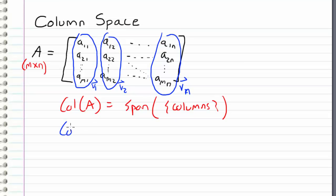So we can write the column space of A as the span of the set of vectors that compose this matrix, which are V1, V2, all the way down to Vn.